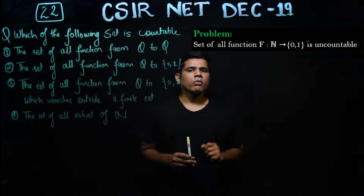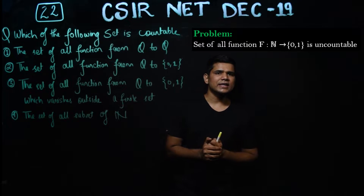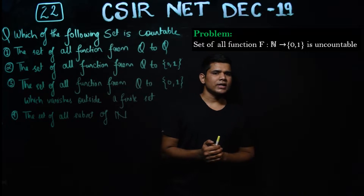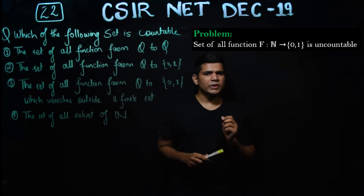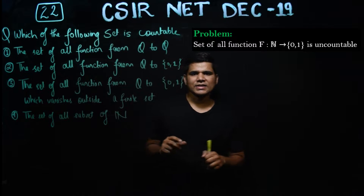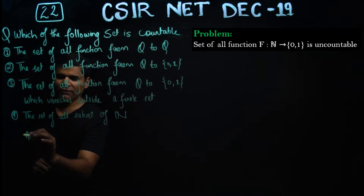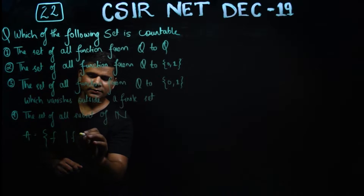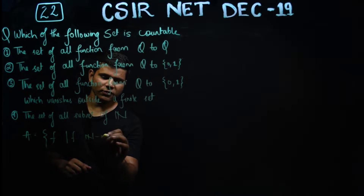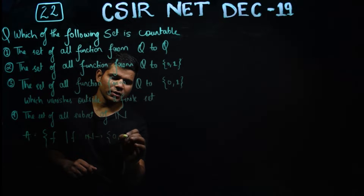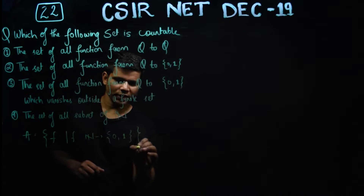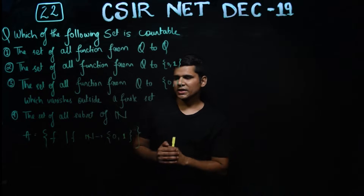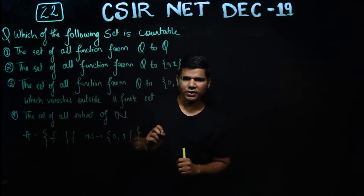The problem I am talking about states that the set of all functions from N to {0,1} is uncountable. That means the set F = { f : f is a function from N to {0,1} } is uncountable.